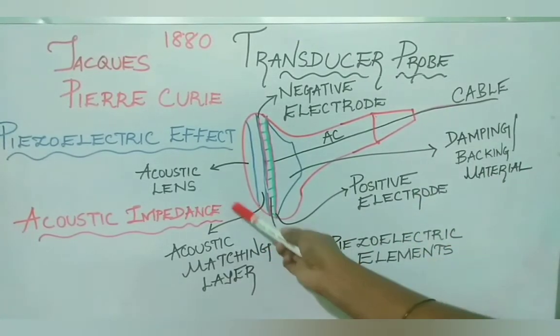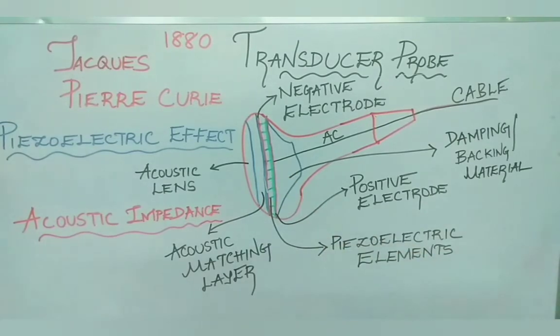Now what is acoustic impedance? Acoustic impedance is the stiffness or flexibility of a tissue to the ultrasound beam. It describes how much resistance an ultrasound beam encounters as it passes through a tissue.